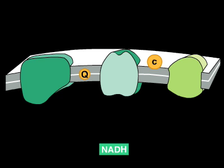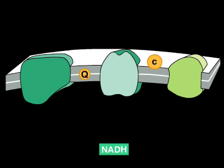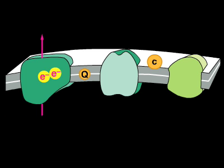The electron transfer begins at a multiprotein complex called the NADH dehydrogenase complex. This complex has a higher affinity for electrons than NADH and easily strips away the high-energy electrons. As the electrons are transferred from one protein to another in the complex, energy is released and used to pump protons across the membrane.